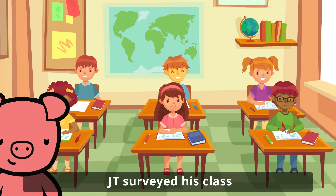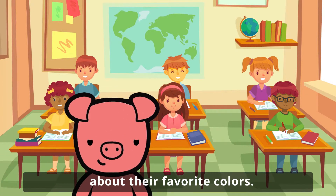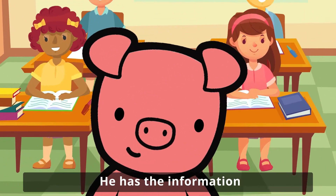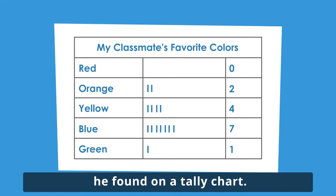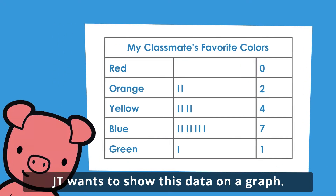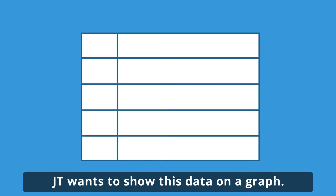JT surveyed his class about their favorite colors. He has the information he found on a tally chart. JT wants to show this data on a graph.